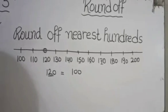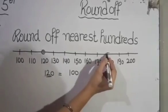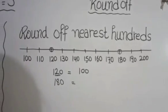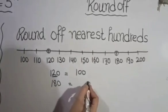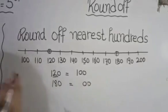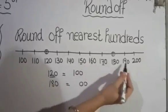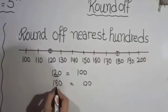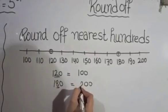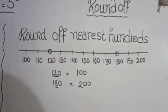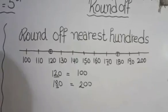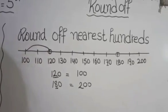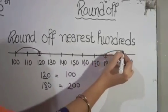Now in the second case, we will take the number 180. We want to round off to the nearest 100, so write two 0s at the back. If we have a number from 5 to 9 at the tens place, add 1 to the hundreds place. Here the tens digit is 8, so we add 1 to the hundreds place and write 2. So number 120 is nearest to 100, and number 180 is nearest to 200.